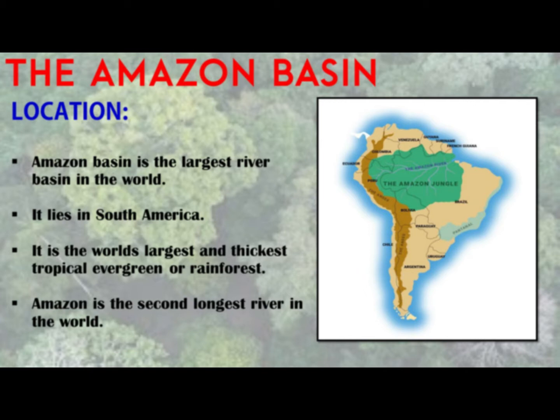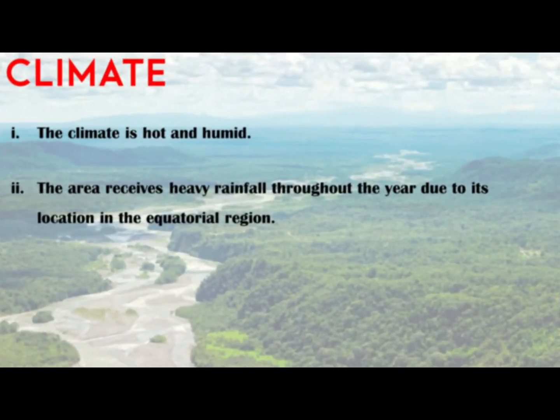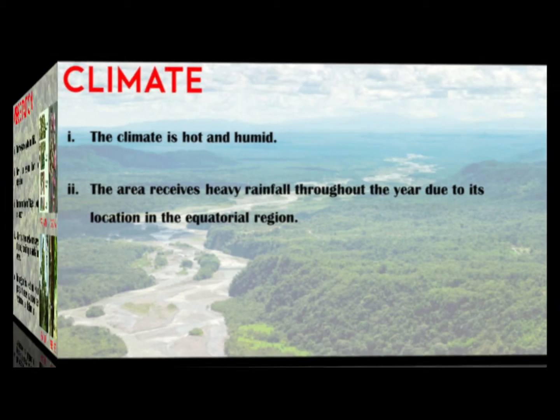It is the world's largest and thickest tropical evergreen forest, or you can say rainforest. The Amazon is the second longest river in the world after the Nile River. The climate of the Amazon basin is hot and humid. The area receives heavy rainfall throughout the year due to its location in the equatorial region.